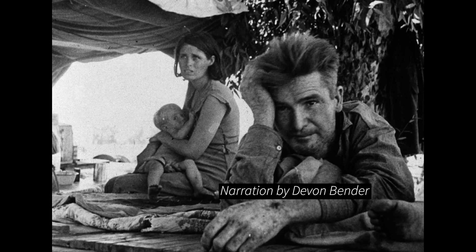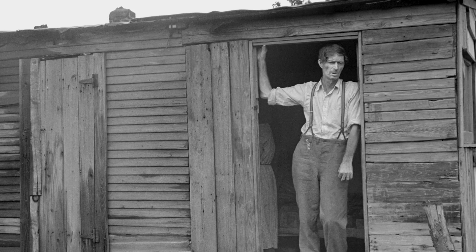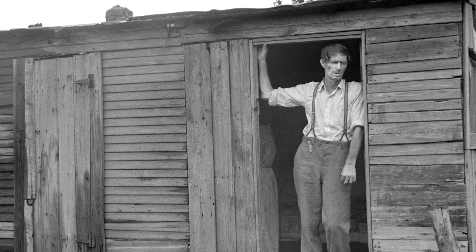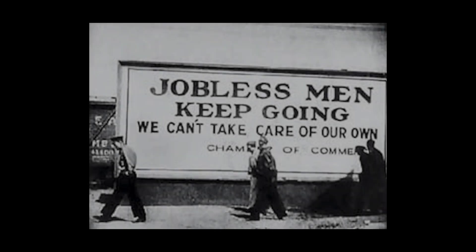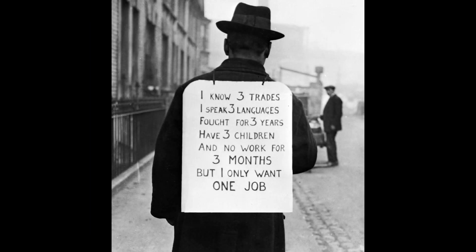The Great Depression, which occurred between 1929 and the late 1930s, was one of the most severe economic downturns in history, leaving a profound impact on the United States. Triggered by the stock market crash of 1929, the Depression led to widespread unemployment, bank failures, and significant declines in industrial production, causing immense suffering and altering the nation's economic and social landscape.